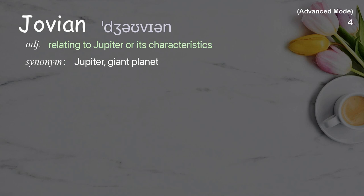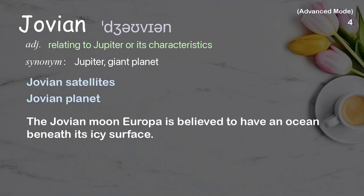Jovian. Relating to Jupiter or its characteristics. Examples: Jovian satellites, Jovian planet. The Jovian moon Europa is believed to have an ocean beneath its icy surface.